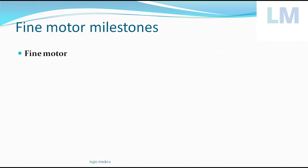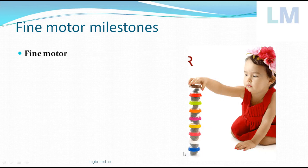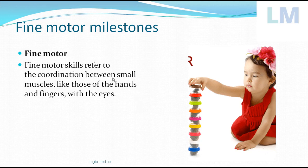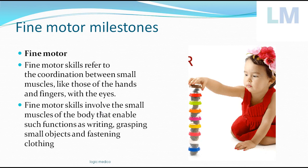Today's topic is fine motor milestones. Here we can see a baby girl building a tower of about 6 cubes using the fine muscles of her hand, coordinating her small hand muscles and fingers with her eyes. Such fine motor functions help in writing, grasping small objects, fastening clothes like buttoning or unbuttoning, and tying shoe laces. These are all examples of fine motor skills.